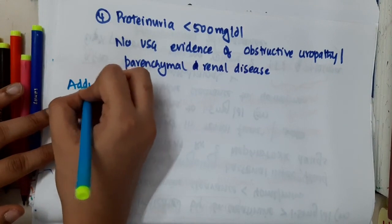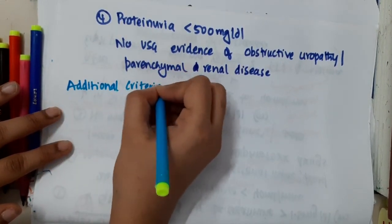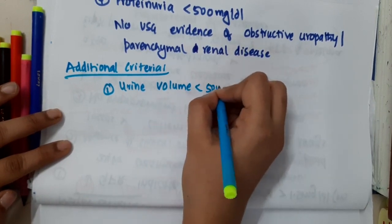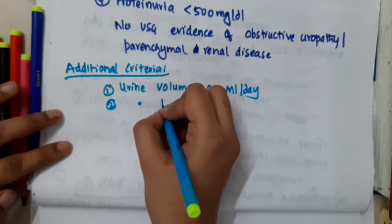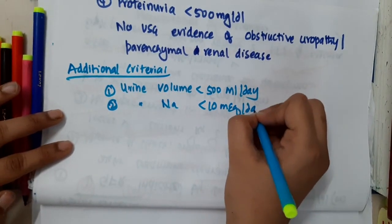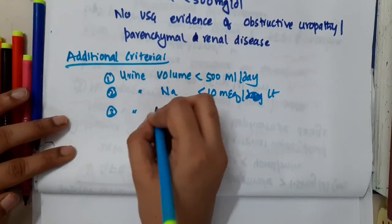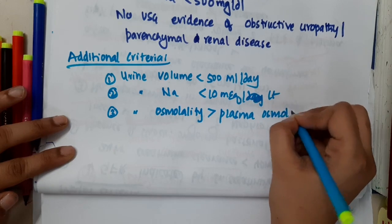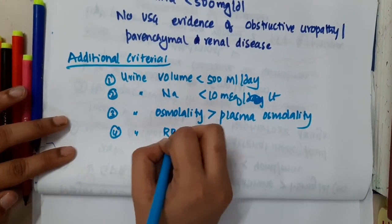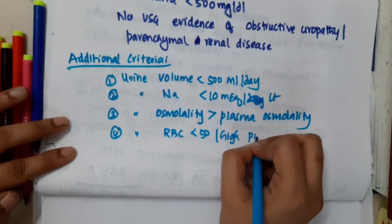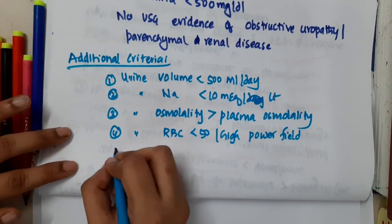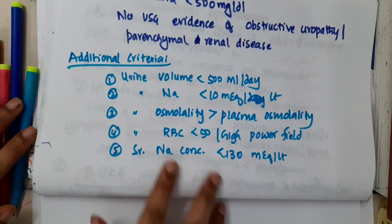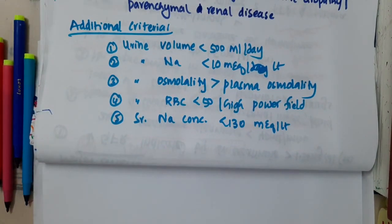The additional criteria include: first, urine volume less than 500 ml per day; second, urine sodium less than 10 mEq per liter; third, urine osmolality greater than plasma osmolality; fourth, urine RBC less than 50 per high power field; and fifth, serum sodium concentration less than 130 mEq per liter. These are the additional criteria for hepatorenal syndrome.